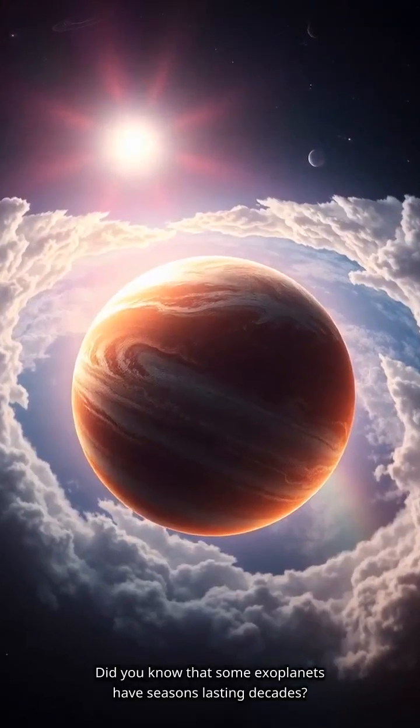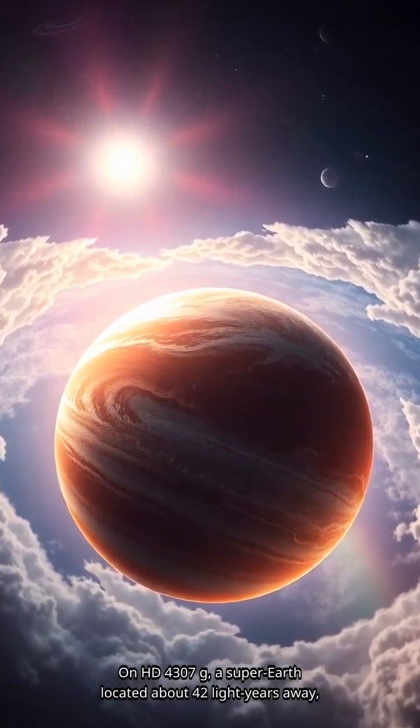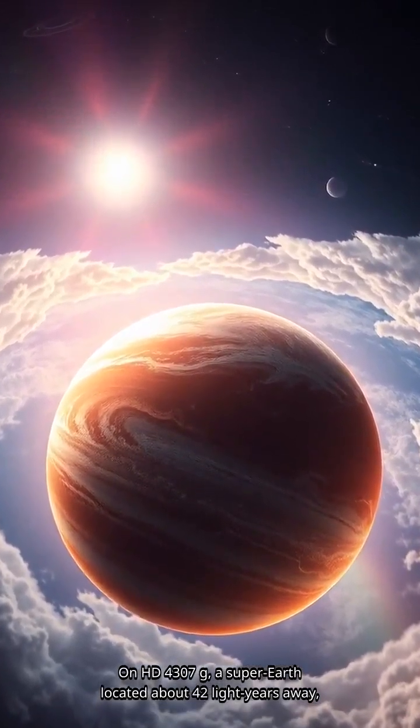Did you know that some exoplanets have seasons lasting decades? On HD 4307G, a super-Earth located about 42 light-years away,